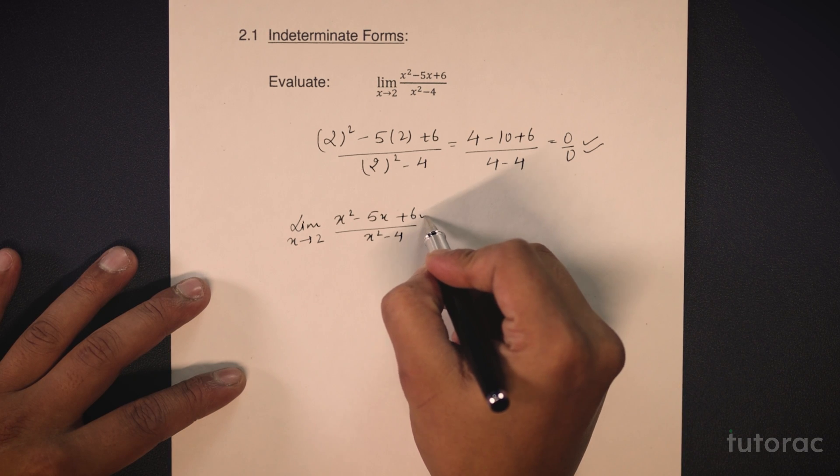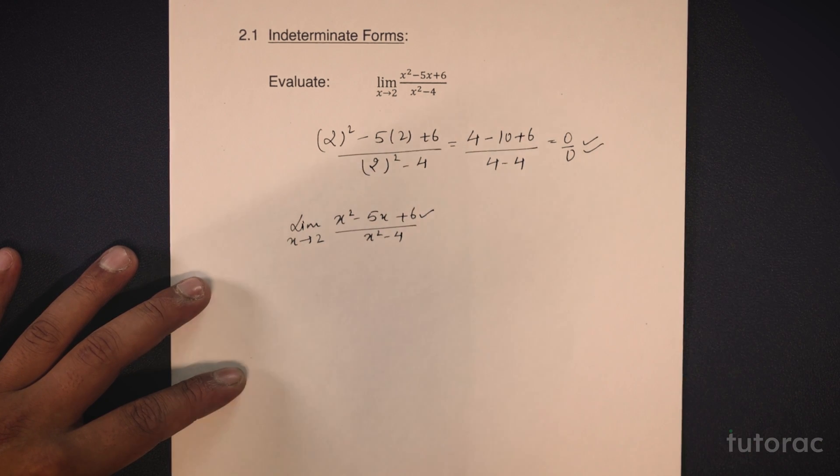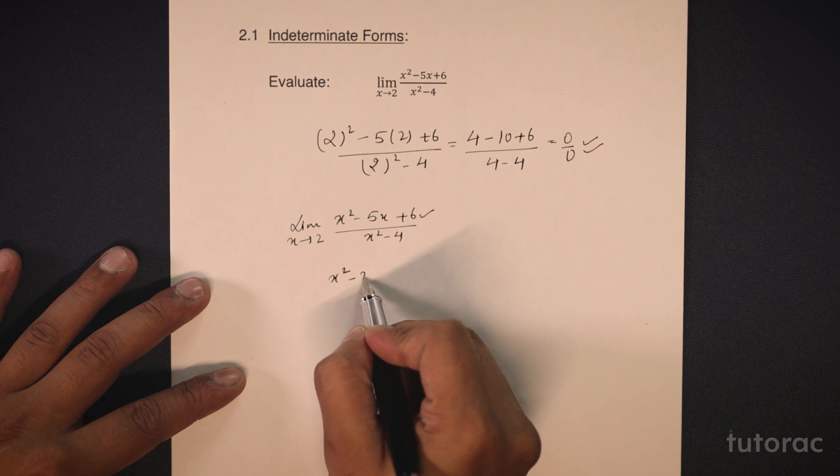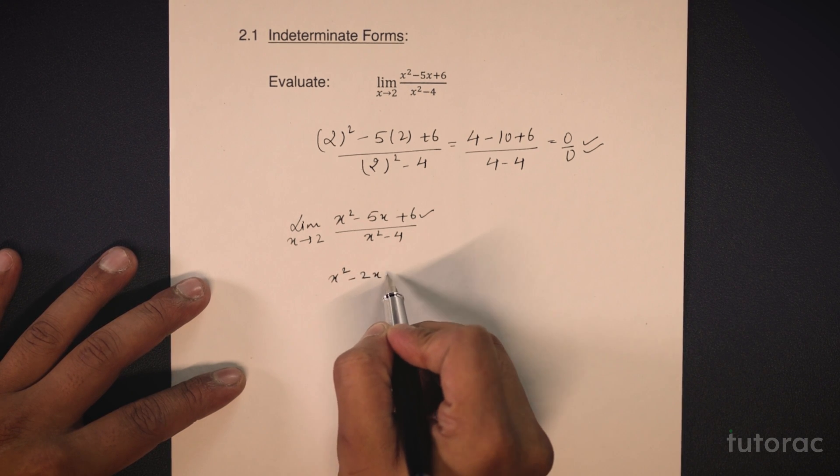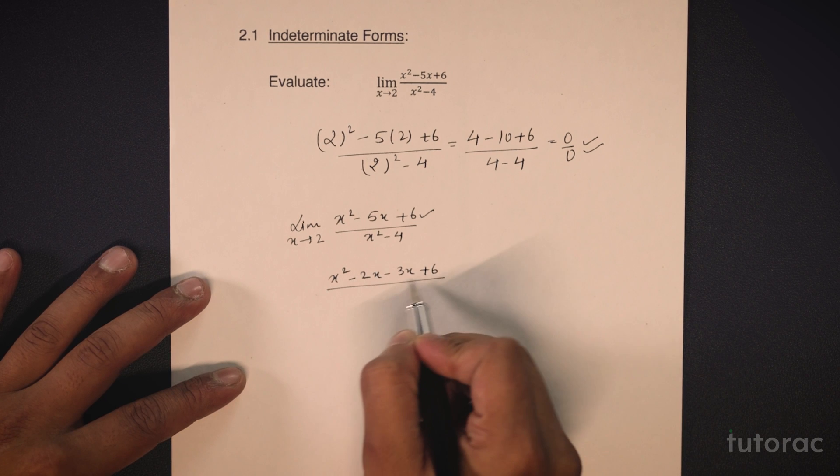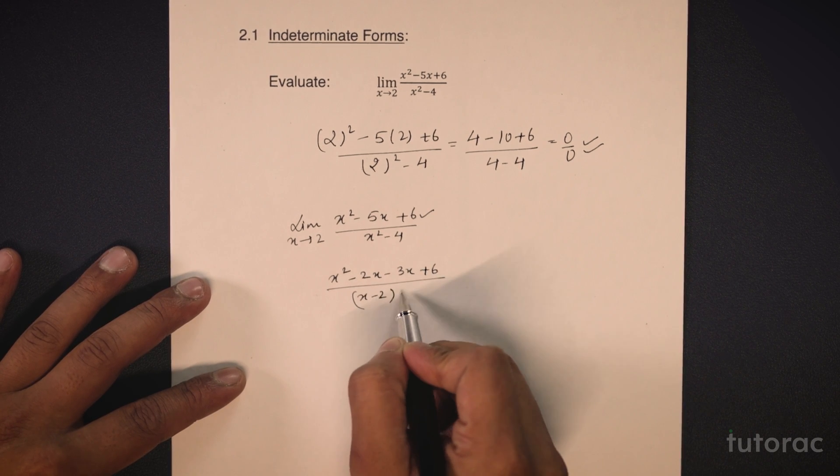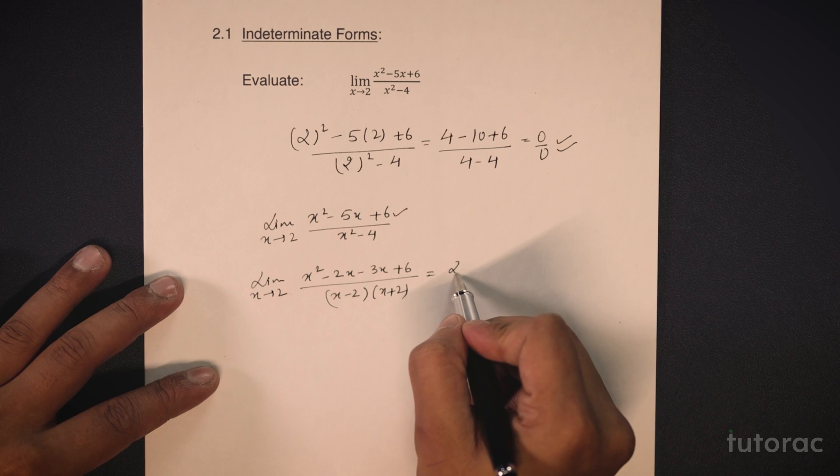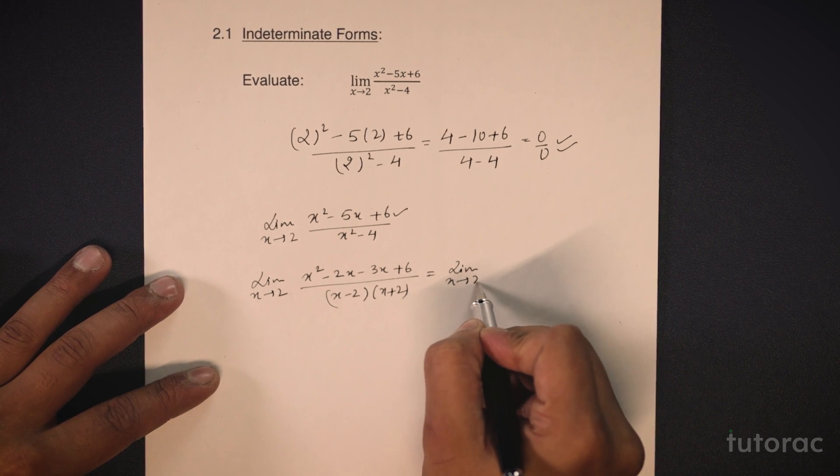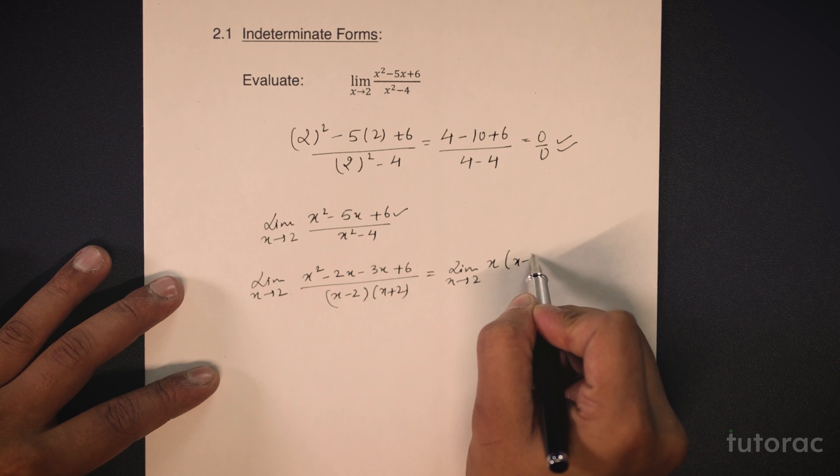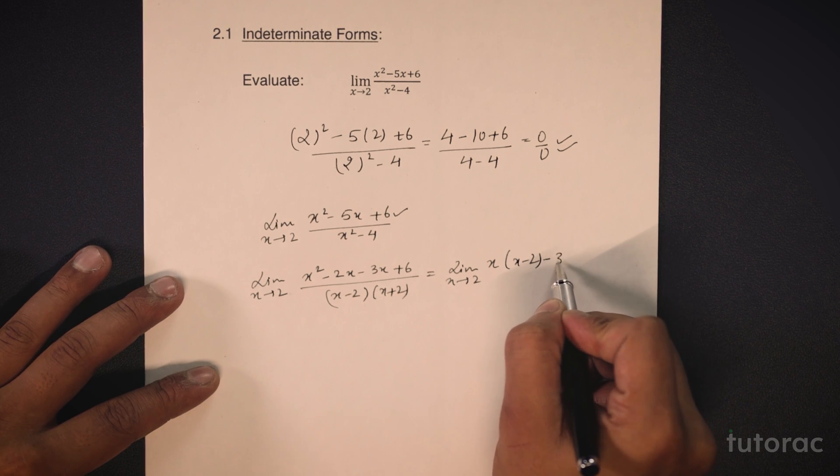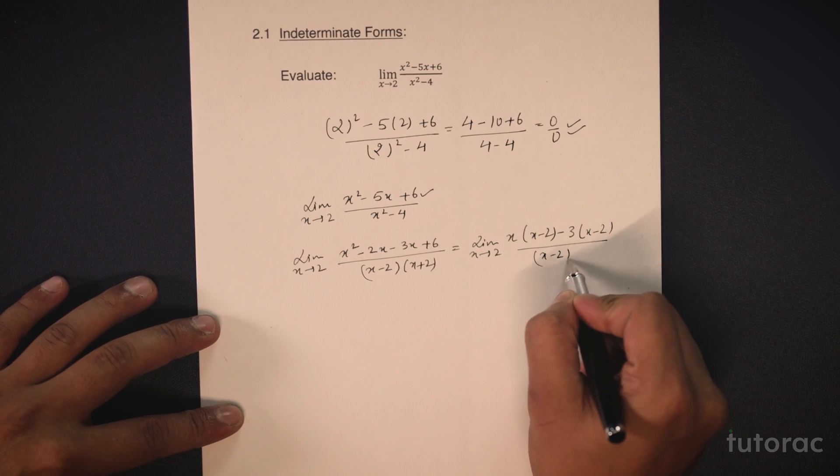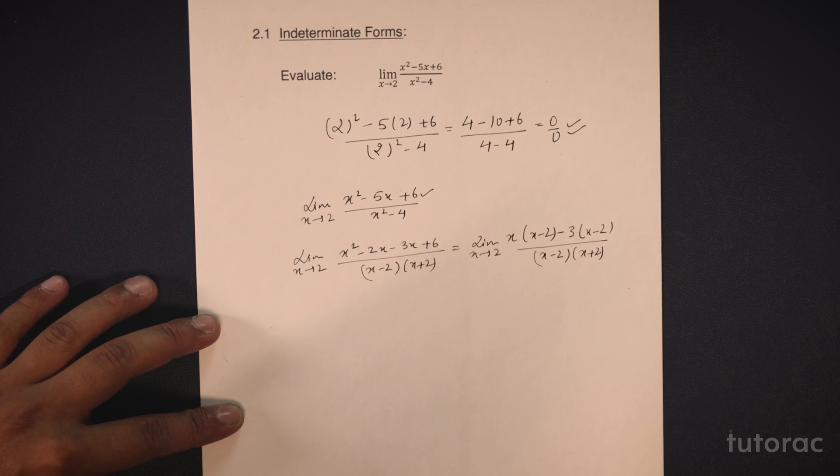I can easily factorize the numerator and denominator and I will get x square minus 2x minus 3x plus 6 upon x minus 2 and x plus 2 and the limit is x tends to 2. I can write this as limit x tends to 2, x times x minus 2 minus 3 times x minus 2 whole upon x minus 2 multiplied by x plus 2.